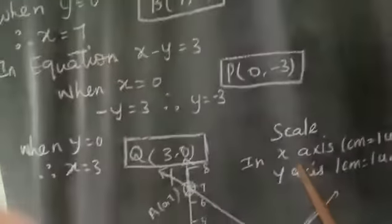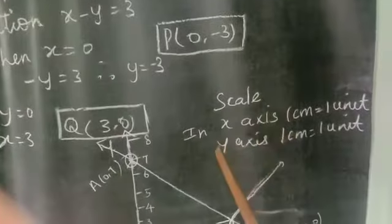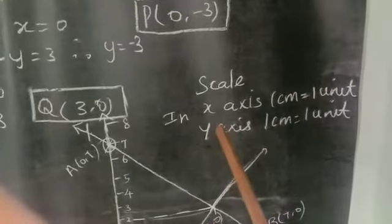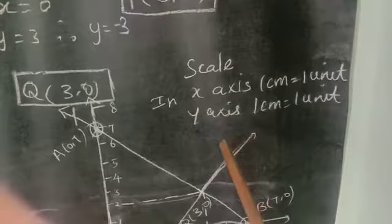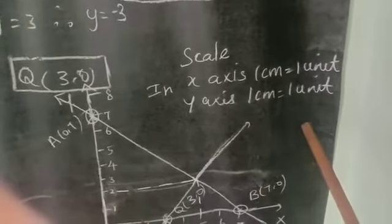The next important one. We write the scale. Here we use in x-axis 1 cm is equal to 1 unit and y-axis 1 cm is equal to 1 unit.